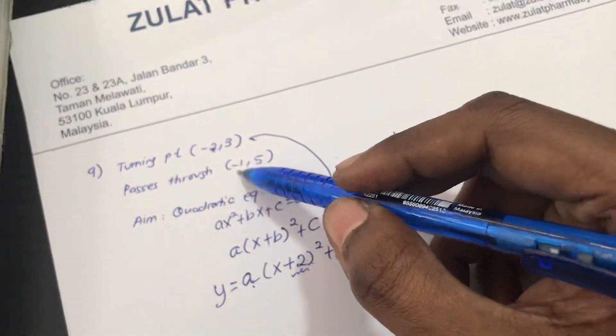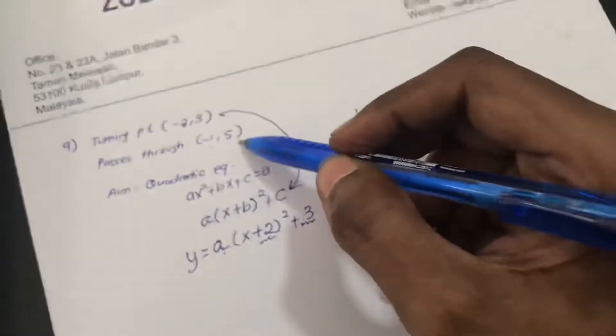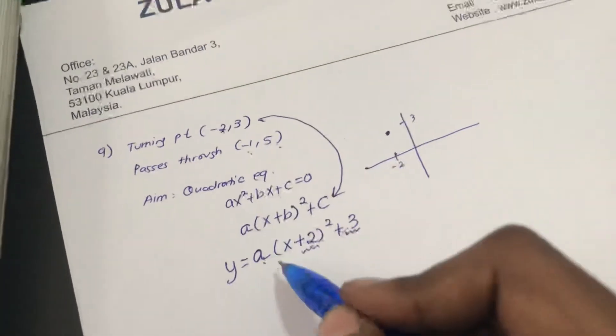They gave me another point, which is (-1, 5). Correct? So take this and put it into the curve. So let's solve.